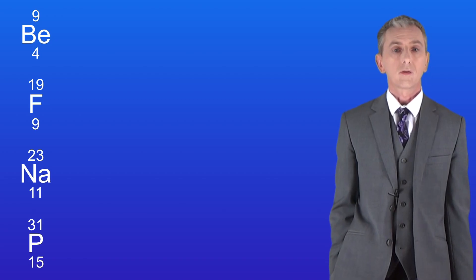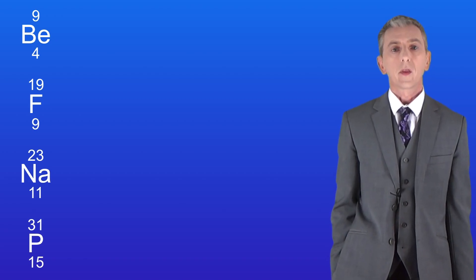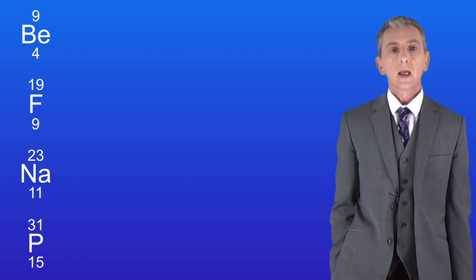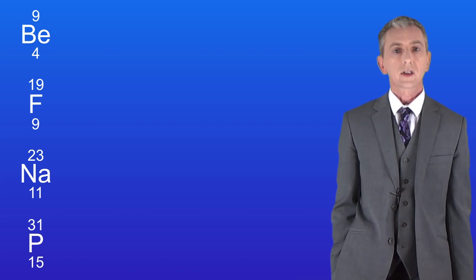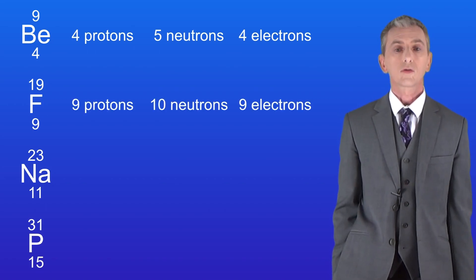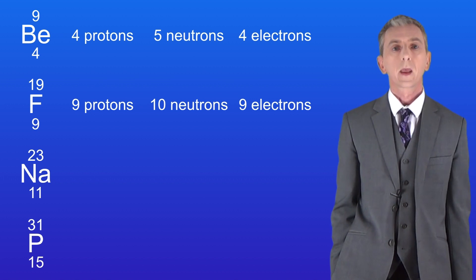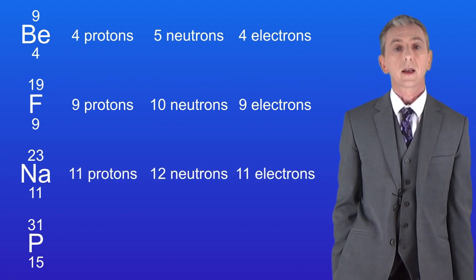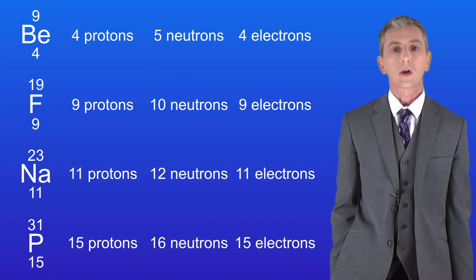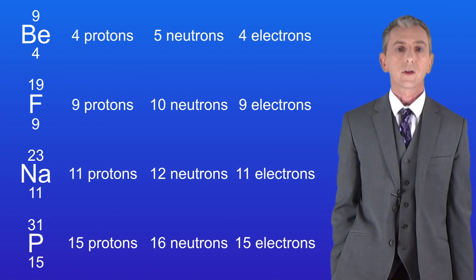I'm showing you here the symbols for four different elements and I'd like you to determine the number of protons, neutrons and electrons for each element. You should pause the video now and work this out. Atoms of beryllium contain four protons, five neutrons and four electrons. Atoms of fluorine contain nine protons, 10 neutrons and 9 electrons. Atoms of sodium contain 11 protons, 12 neutrons and 11 electrons. And finally atoms of phosphorus contain 15 protons, 16 neutrons and 15 electrons.